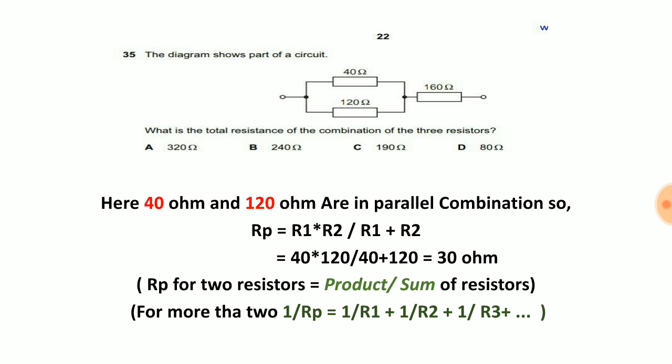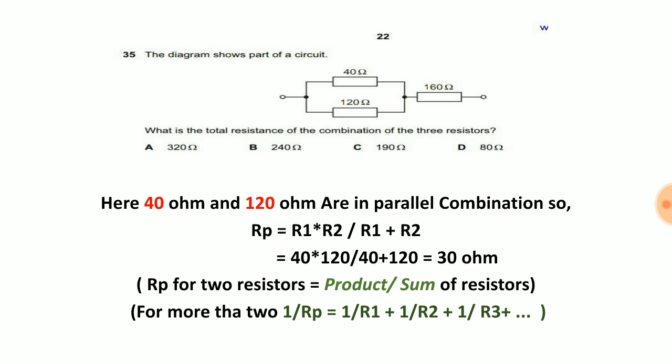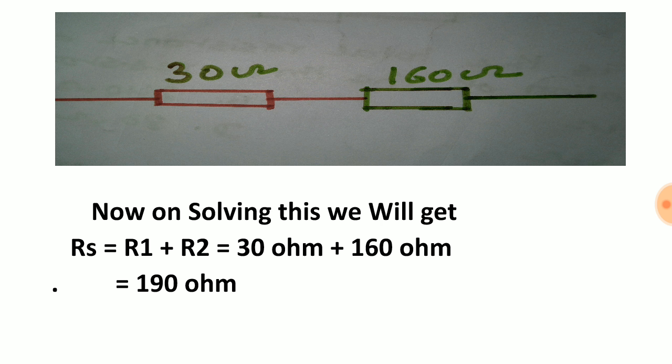Now our circuit will reduce like this: our 40 and 120 can be simply replaced by one resistor having resistance 30 ohm, and 30 ohm and 160 ohm are in series combination.